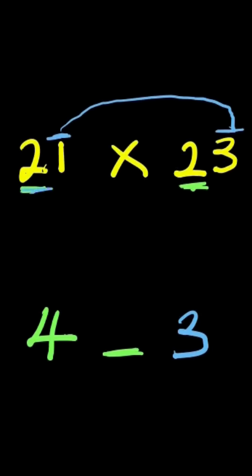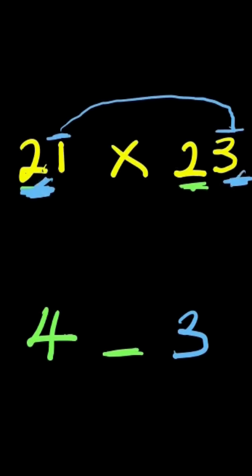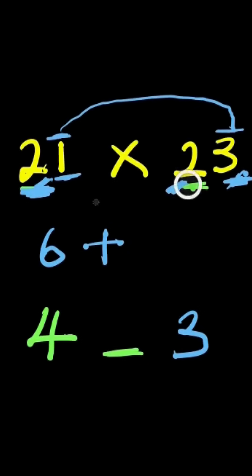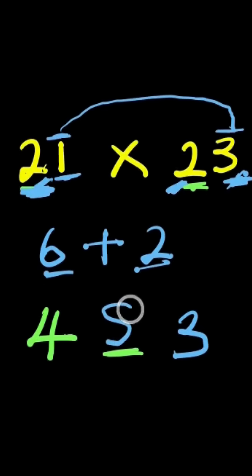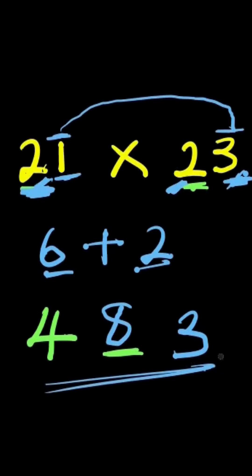Then you multiply the first number here with the last number here — that's 2 times 3, you have 6. Then you multiply the last number here with the first number here — that's 1 times 2, you have 2. So you add 6 plus 2, that is 8. The final answer is 4, 8, 3.